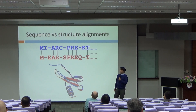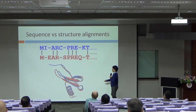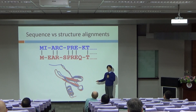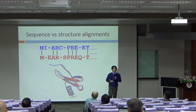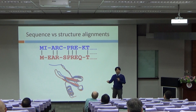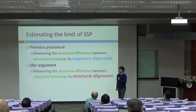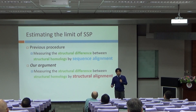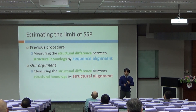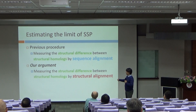It was very contradicting because we already had the structure. Why should we measure structural difference by sequence? Our argument was that we should measure the structural difference between structural homologues by structure alignment. And we did that.